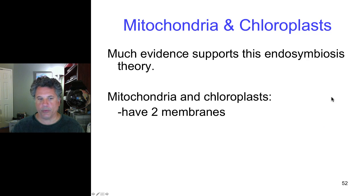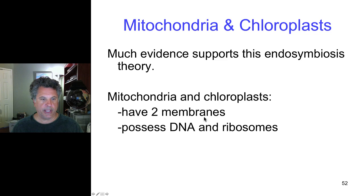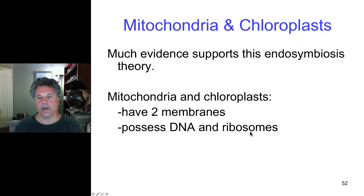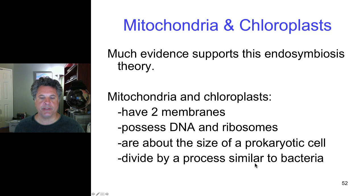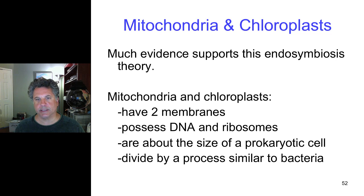Not only do mitochondria and chloroplasts have two membranes, but they also possess their own DNA and ribosomes. Their DNA is circular — like bacterial chromosomes — and they contain their own protein manufacturing machinery in ribosomes, evidence of a previous existence as free-living bacteria. They are also about the size of a prokaryotic cell, more evidence for endosymbiont origin. Furthermore, their division process resembles bacteria more than eukaryotic division — their DNA replicates and they divide to produce more mitochondria and chloroplasts in a bacterial fashion.